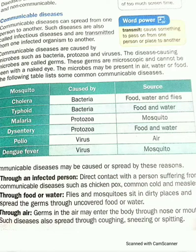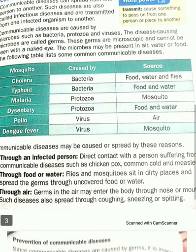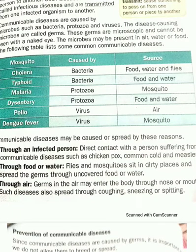For communicable disease, another name is infectious disease. Infectious disease means a disease which can be transmitted from one infected person to another. This communicable or infectious disease spreads through microorganisms like bacteria, protozoa, and virus. We discussed some diseases caused by these microbes: cholera, typhoid, malaria, dysentery, polio, and dengue fever.